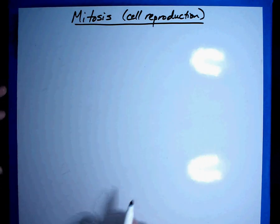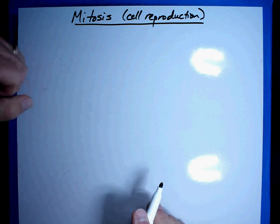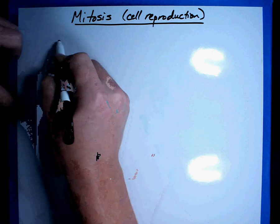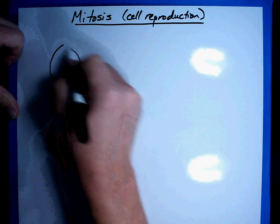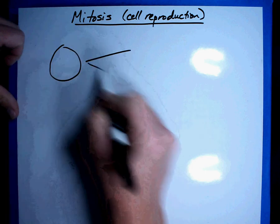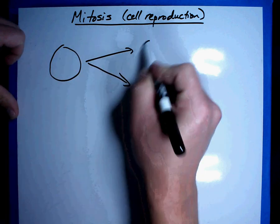Now there are a couple of reasons why a cell would go through mitosis. What we're basically going to do is we're going to take one cell and make two new cells out of it.